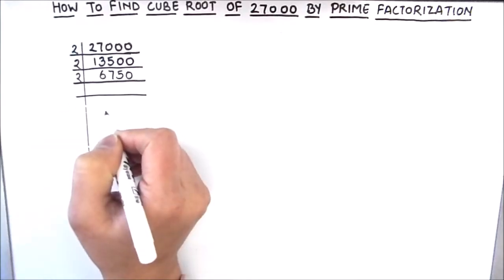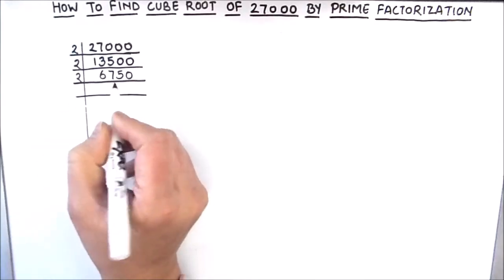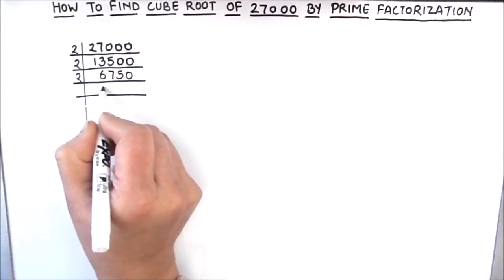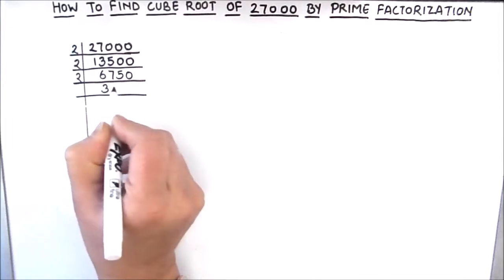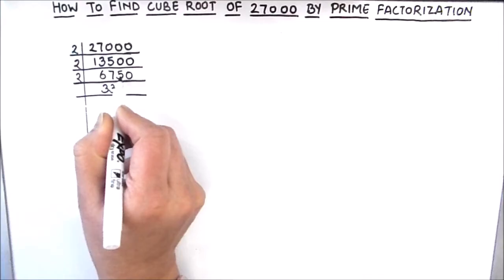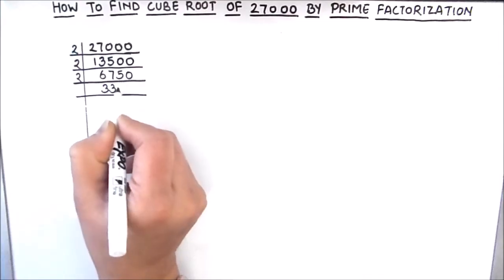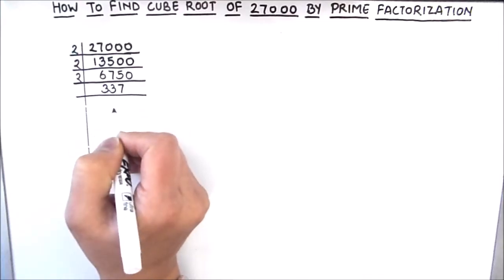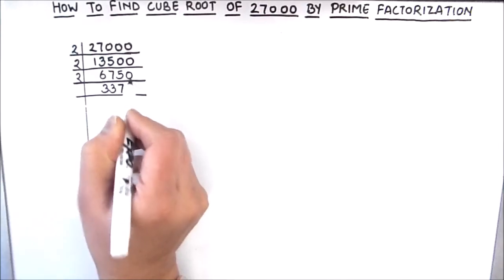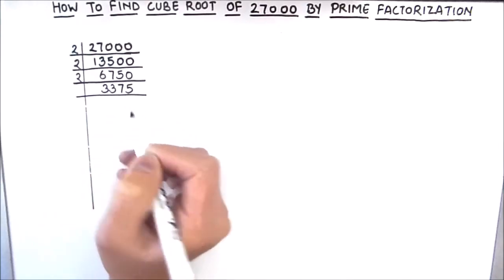Whenever the number is even we are going to use 2 as the prime factor. 2 times 3 is 6, 1 is carried over this becomes 15, 2 times 7 is 14 and 1 is carried over this becomes 10, 2 times 5 is 10. So 6750 divided by 2 gives us 3375.